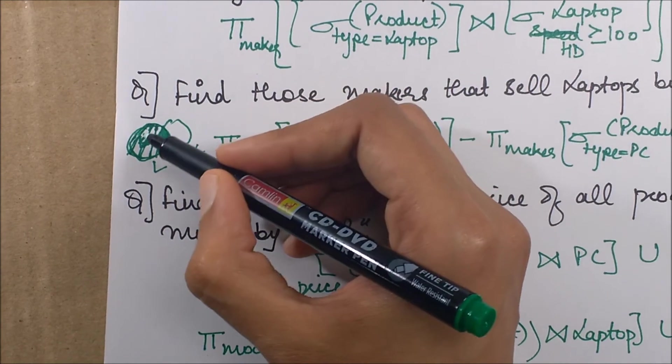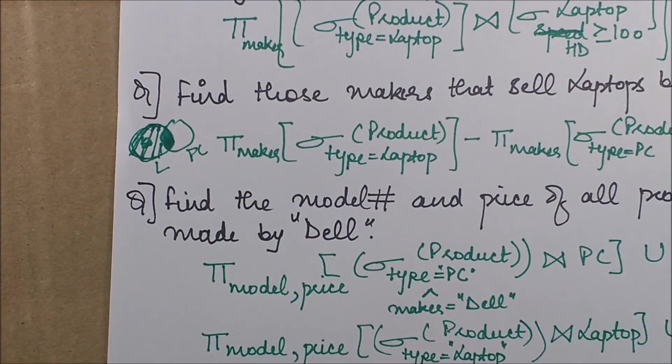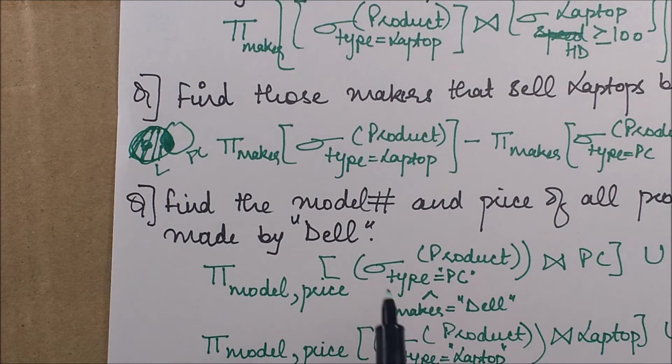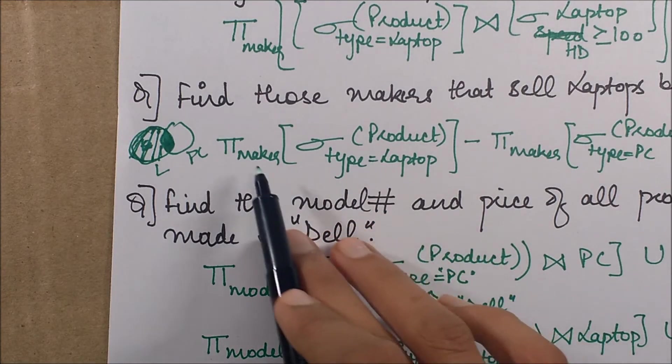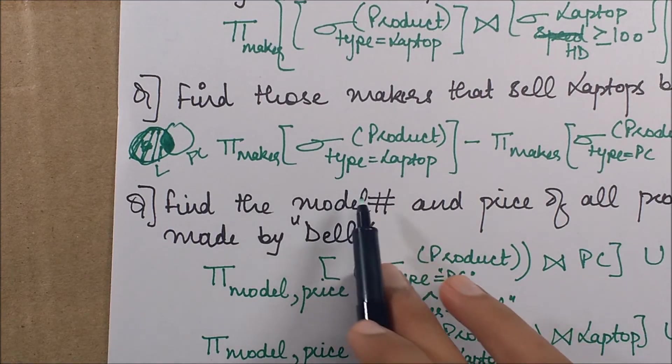So essentially, by using set difference, we'll be able to extract these makers. So what I've done is I have first extracted the makers corresponding to the ones who sell laptops.